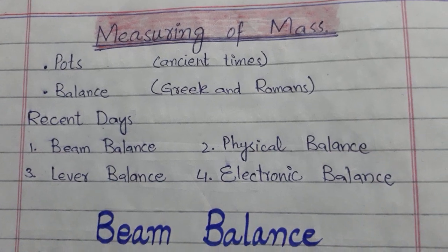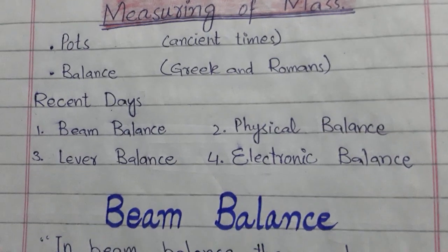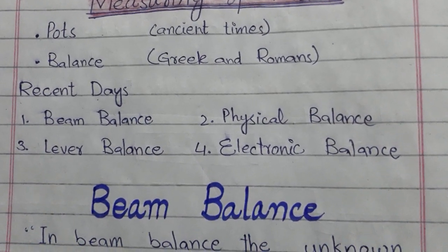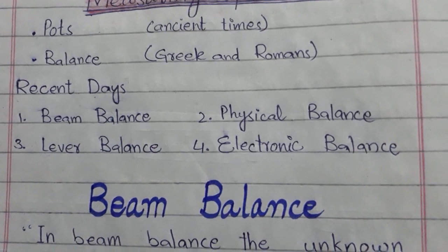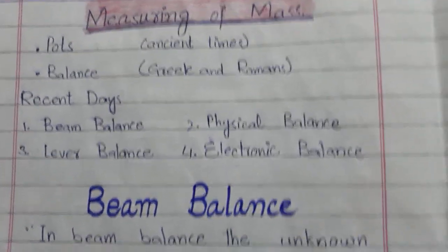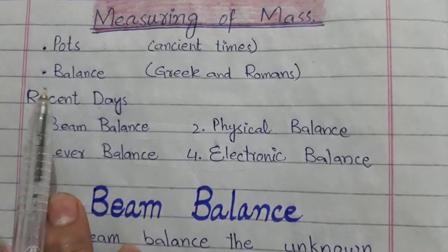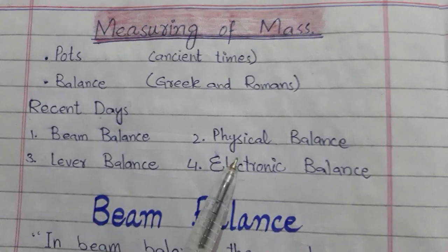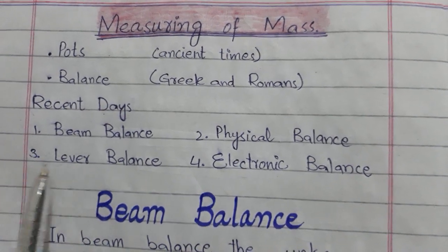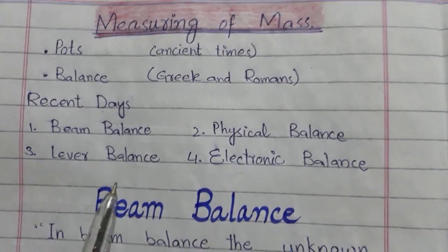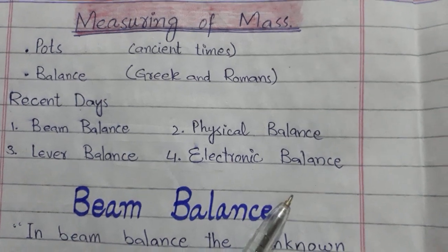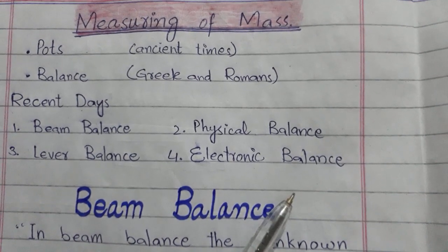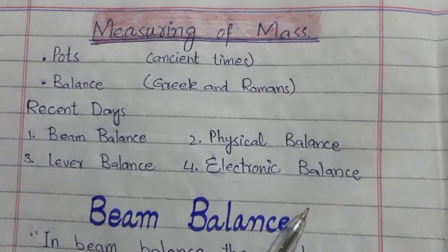We have measuring instruments in recent days. There are four: the first one is beam balance, the second one is the physical balance, the third one is the lever balance, and the fourth one is the electronic balance. We will discuss these four balances today.